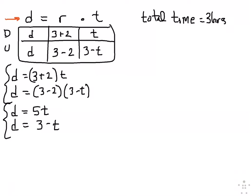So here's our system. Now this one, since they're both set equal to D, we could use equal value method. So I take these two right-hand sides and I set them equal to each other because they both equal D. So I have five T equals three minus T. I add T to both sides. So six T equals three. So T equals one half.